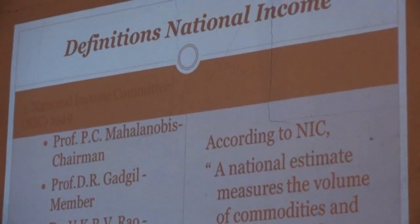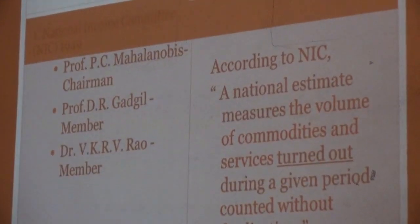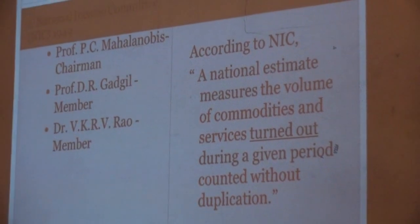There are three definitions of national income given in the book. The first definition is by the National Income Committee, whose members were Professor P.C. Mahalanobis (chairman), Dr. Gargiv, and V.K. Arvira. According to the National Income Committee: 'A national estimate measures the volume of commodities and services turned out during a period, counted without duplication.' Three points to remember: 'national estimate' means national income; 'turned out' means production; and 'counted without duplication' means avoiding double counting of goods and services produced in the country during one year.